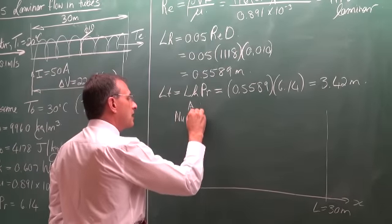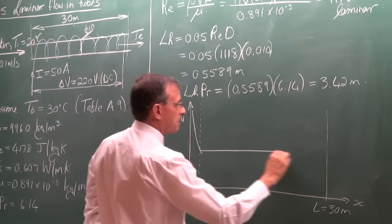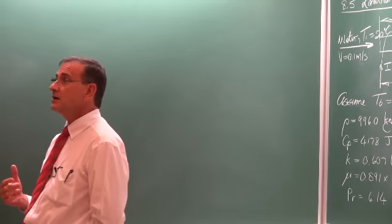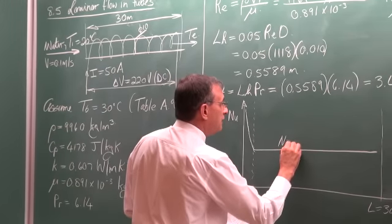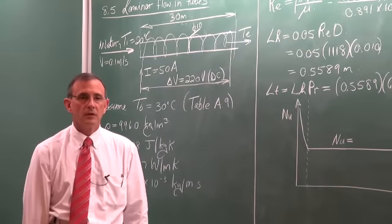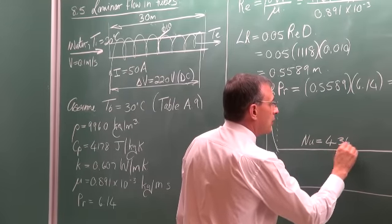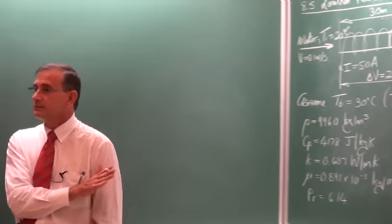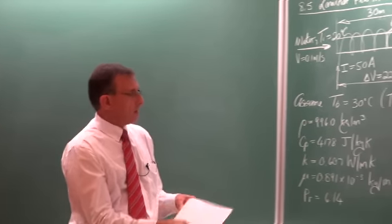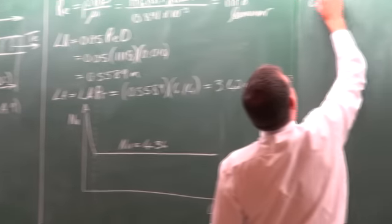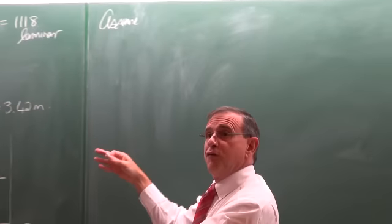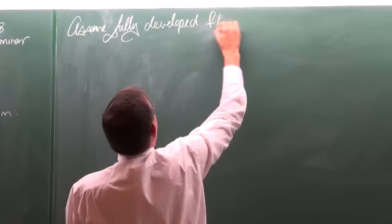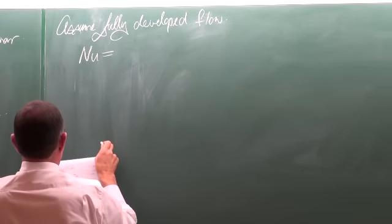If we look at the development of the Nusselt number, it will be high during the developing region and then reach a fully developed value. Since this is a constant heat flux case with fully developed laminar flow, the Nusselt number must equal 4.36 — we've derived that Nusselt number. So we assume fully developed flow, thus the Nusselt number is 4.36.